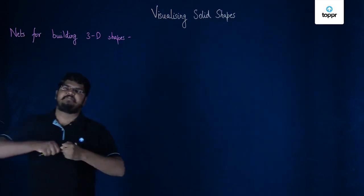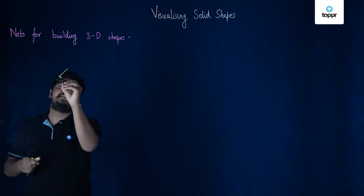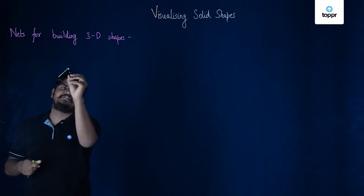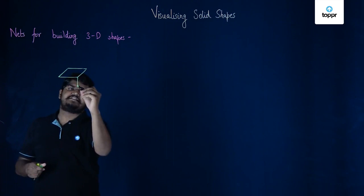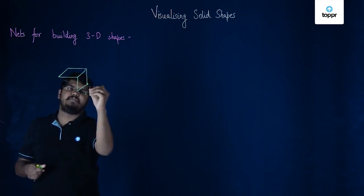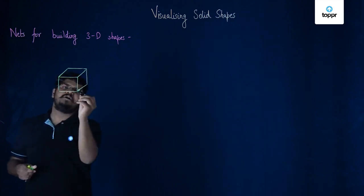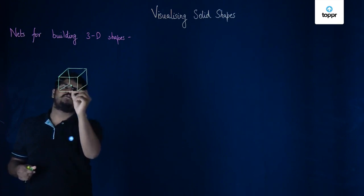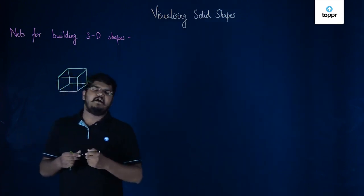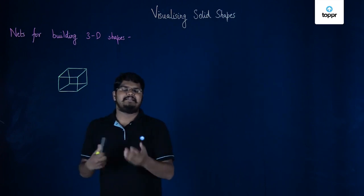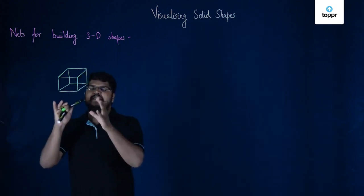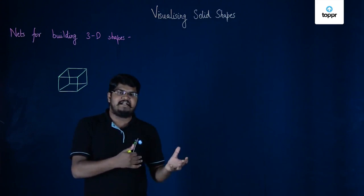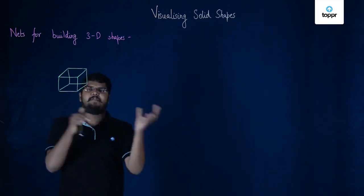To understand nets for building 3D shapes, we'll have to take a three-dimensional shape in consideration, and for this the perfect 3D shape is a cube. The reason is a cube has all faces as congruent squares, and because of that the nets can be quite different. We can obtain any number of nets and using them we can form our cube.